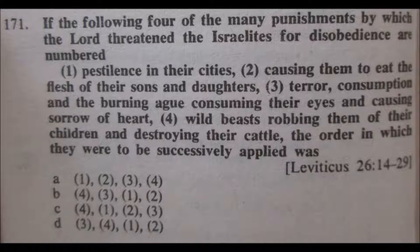...four, wild beasts robbing them of their children and destroying their cattle — the order in which they were to be successively applied was: A, 1, 2, 3, 4; B, 4, 3, 1, 2; C, 4, 1, 2, 3; or D, 3, 4, 1, 2.